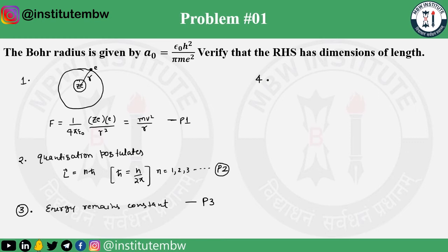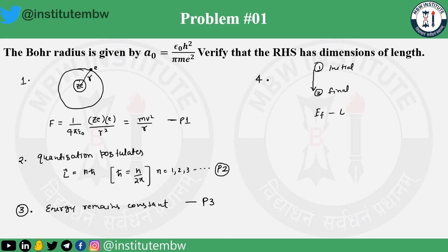Postulate 4 states that electromagnetic radiation is emitted if an electron changes its orbit. Let's say it is in some orbit and it changes to orbit 2, and initially it was in orbit 1 — so let's say initial and final — then the energy that will be emitted corresponds to the difference. That is Postulate 4. We know that L = mvr = nħ, so mvr = nħ.